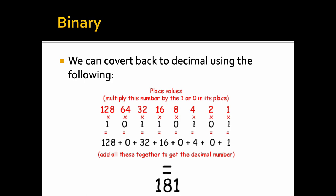We can convert back to decimal using the following routine. Take the binary pattern 1 0 1 1 0 1 0 1. Starting at the right-hand side: 1×1=1, 2×0=0, 4×1=4, 8×0=0, and so forth. We add all these together to work out what that binary representation is in decimal. In this case it's 181.